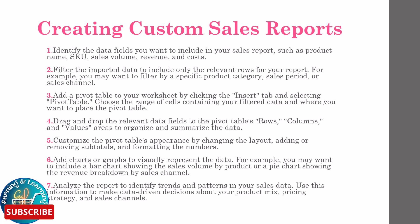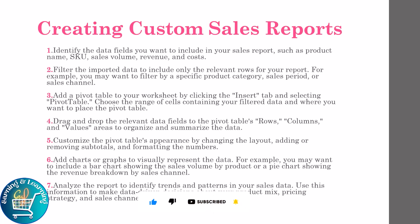The next step is creating custom sales reports. Identify the data fields you want to include in your sales report, such as product name, SKU, sales volume, revenue, and cost. Filter the imported data to include only the relevant rows for your report — for example, you may want to filter by a specific product category, sales period, or sales channel.